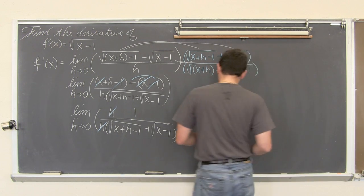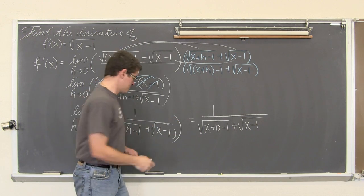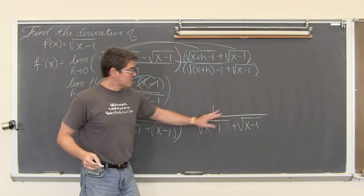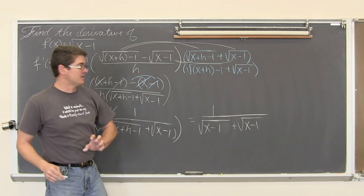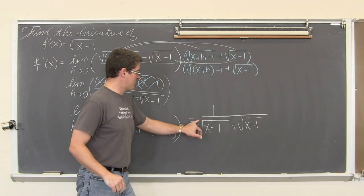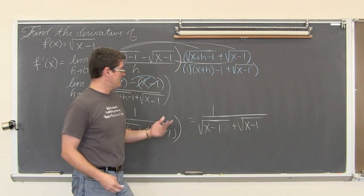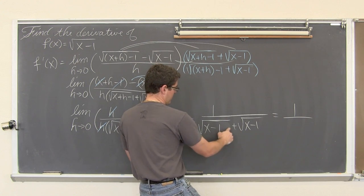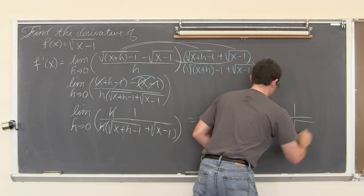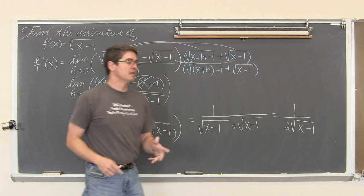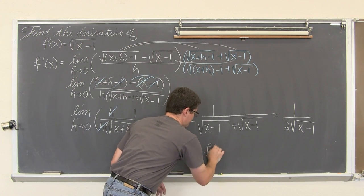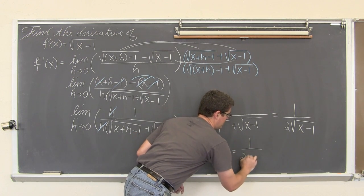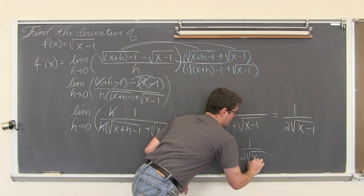Now I can actually find the limit as h approaches zero. I can plug in zero here and not get a denominator which is zero — that would be undefined. So we let h approach zero and we get 1 over the square root of x plus zero minus 1 plus the square root of x minus 1. Since zero drops out, now I can put these two square roots together because they have exactly the same thing on the inside, x minus 1, and they both have the same index of 2. So we get 1 over 2 times the square root of x minus 1. The derivative is f prime of x equals 1 over 2 times the square root of x minus 1.